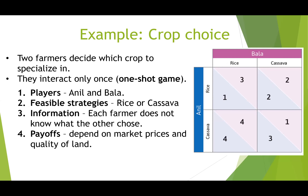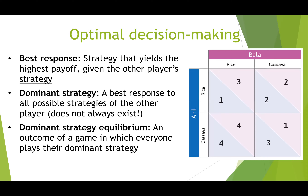The two farmers decide which crop to specialize in. Now let's move on to optimal decision making — the strategy that yields the highest payoff given the other player's strategy.